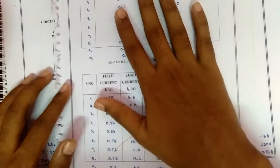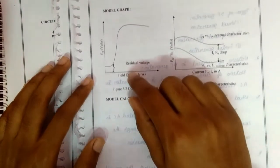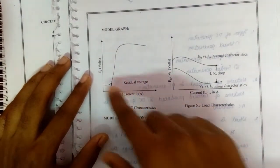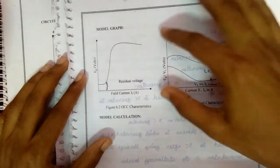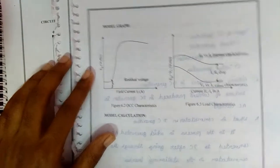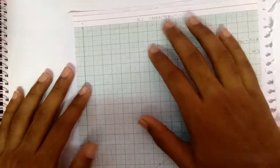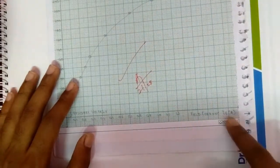After noting down all the points and values, next we have to draw a graph. The graph for OCC characteristics looks like this, and for load characteristics it will look like this.